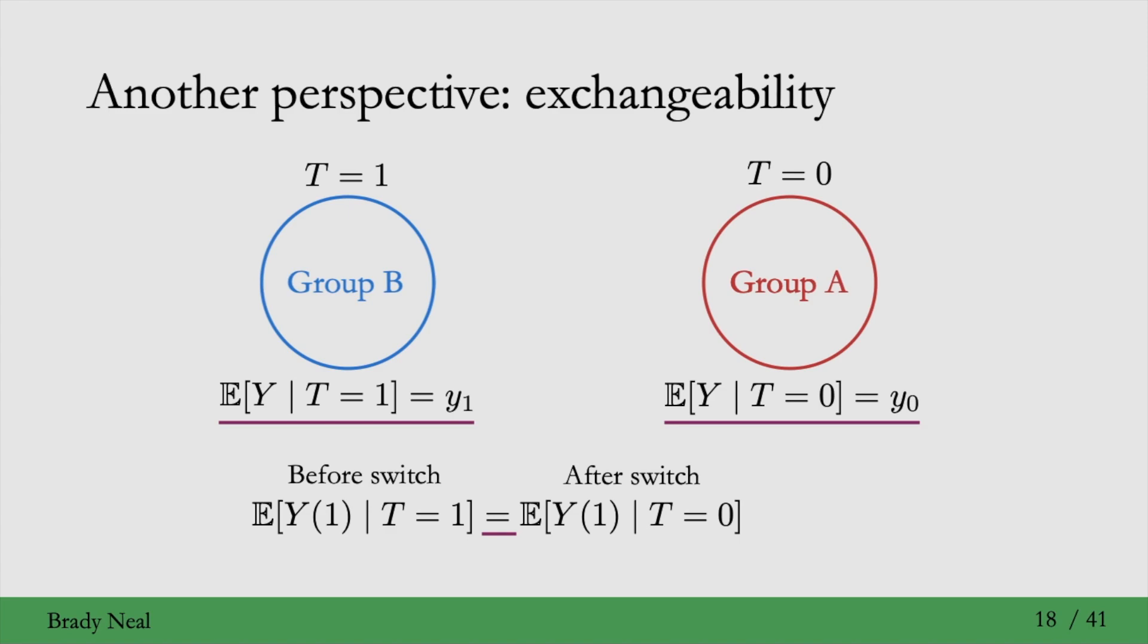So, what this tells us is that the expected value of the y1 potential outcome in the control group - the one on the left is what we would see before the switch. That was group A before the switch, and then on the right is group B after the switch. This tells you that this is all equal to the expected value of the potential outcome, which means that the potential outcome y1 is independent from treatment. Similarly, it's the same for the potential outcome y0. And by independent here, I mean mean independent, because there is an expected value, but that distinction isn't too important for our purposes.